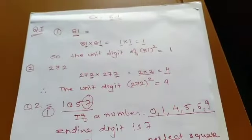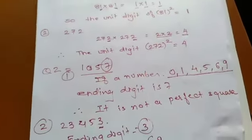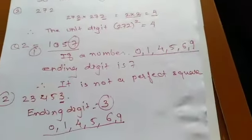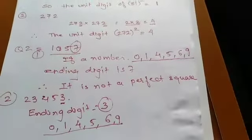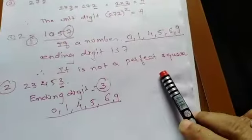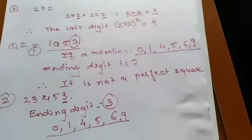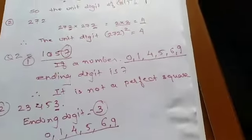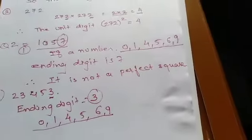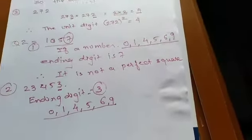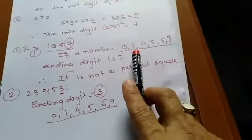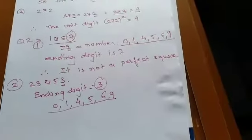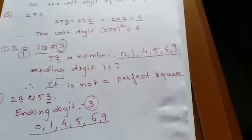Now question number 2. Here it is given, you have to find whether the given number is a perfect square or not. So first one is 1057. Instead of searching whether the given number is a square or not, a trick is there, a rule is there, a law is there. A perfect square number ends with 0, 1, 4, 5, 6, or 9. Now the ending digit, these digits 0, 1, 4, 5, 6, or 9 should be at unit place.